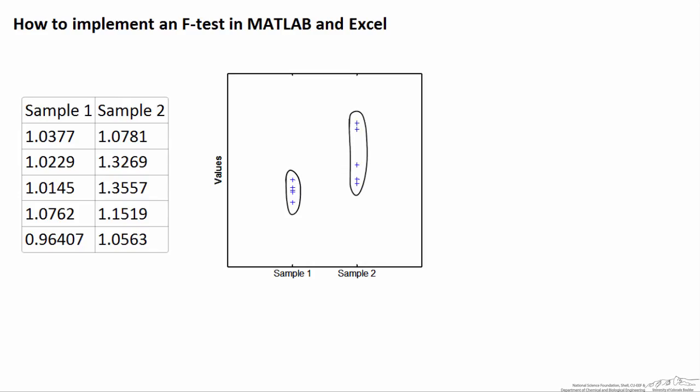Just remember though that statistics is a matter of probability, it only gives us the likelihood that they came from underlying populations with different variances. So here the graph of the data, again, we look at sample two, it looks like it came from a population with a higher variance than sample one.